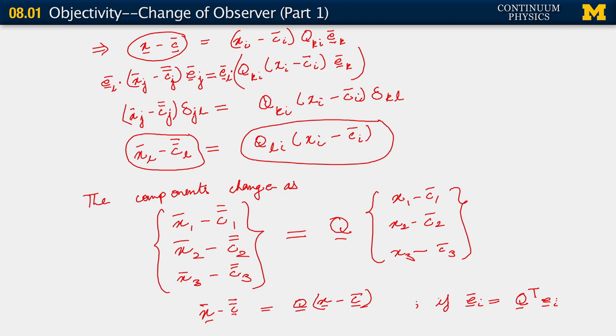And then you observe that what we have here, we can always rewrite as, we can always write x bar minus c double bar, remembering that this is the vector of components, is equal to q x minus or plus yet another vector, vector c, where this vector c is essentially minus q c bar.